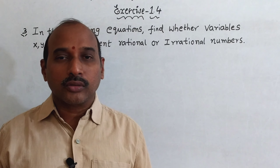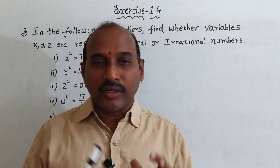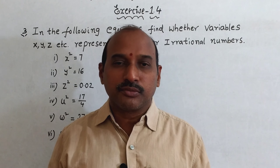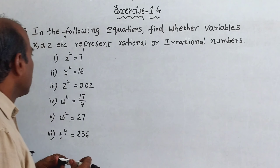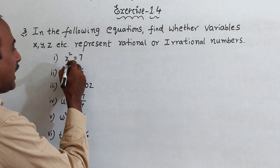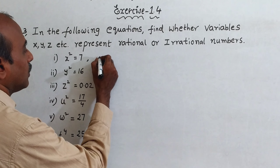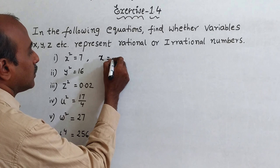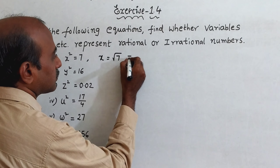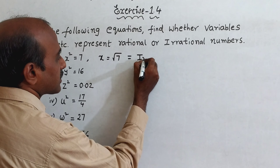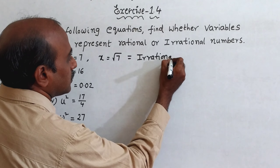Exercise 1.4, question number 3: determine whether the following variables are rational or irrational. First one: x squared is equal to 7, so x is equal to under root 7. Under root 7 is an irrational number.